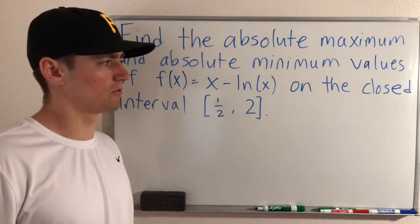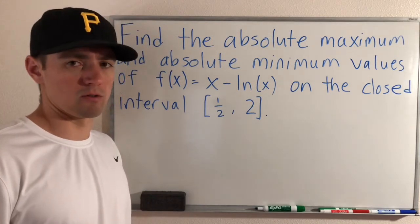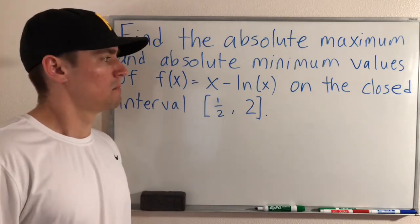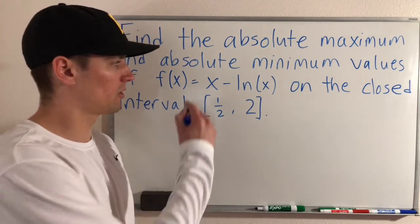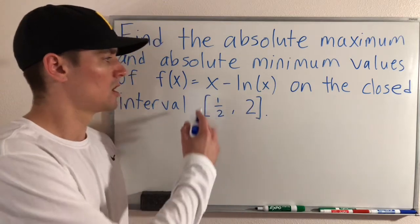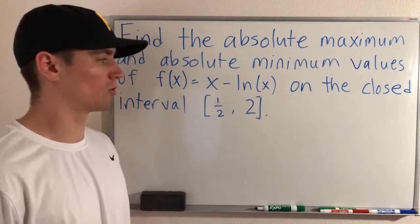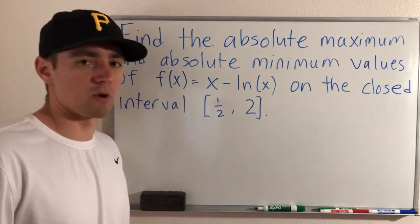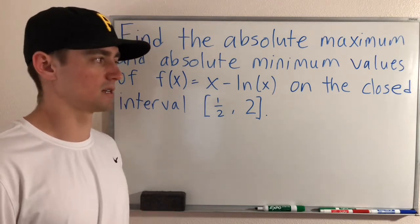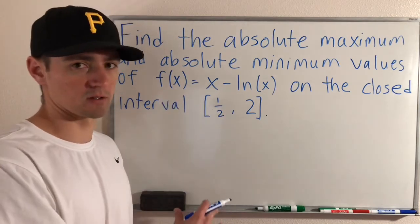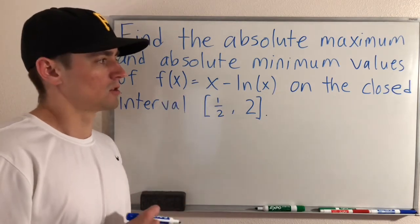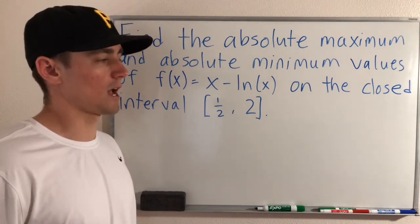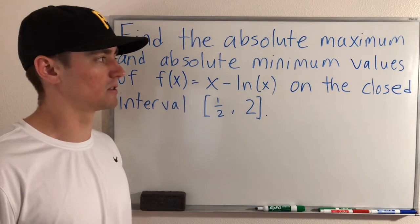This builds off of the extreme value theorem that I talked about a couple days ago — I'll link to that video up here if you want to check that out. Basically, we have a function that is continuous on this entire closed interval one half to two, so we know that an absolute maximum and an absolute minimum must exist on this function within this closed interval.